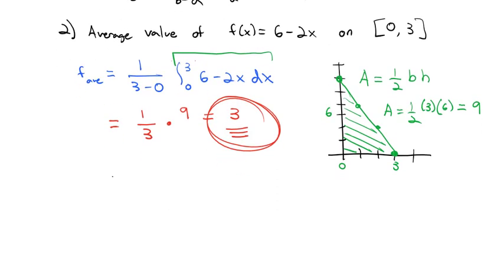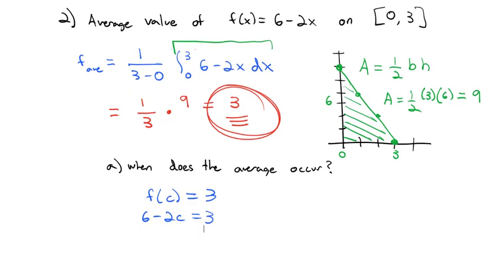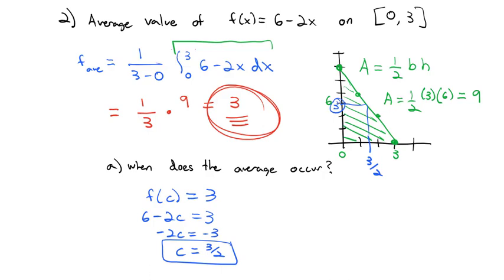We can also find when this average occurs. We want f(c) = 3, so 6 − 2c = 3. Solving: subtract 6 to get −3, divide by −2 to get c = 3/2. So at x = 3/2, the function hits the average height of 3. The average value isn't difficult to calculate and gives great practice finding exact areas under a curve.